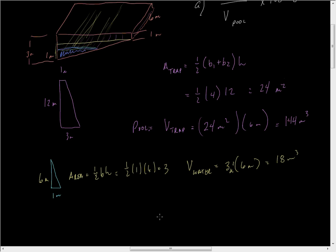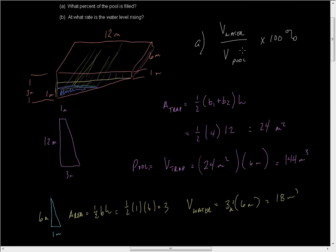Part A asks for our percentage of water. We take our volume of water, which is 18 cubic meters, and divide it by the volume of the pool, which is 144 cubic meters, then multiply by 100%. Simplifying: 18/144 equals 3/24 equals 1/8, and 1/8 times 100% gives 12.5%. That's our percentage.